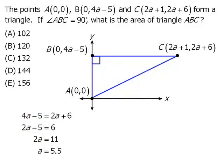Now that we know the value of A, we can find the coordinates of points B and C by plugging A into those expressions. So we now know that point B has coordinates 0, 17, which means this length must be 17.